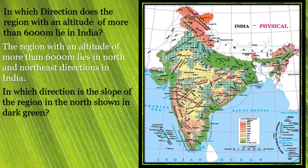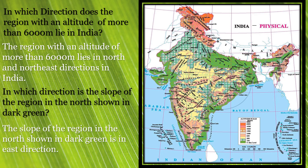The second question: in which direction is the slope of the region in the north shown in dark green? We can see rivers like Ganga, Gomati, Gandak, and Ghagra flowing in the east direction. Since the rivers are flowing eastward, the slope is also in the east direction. So the slope of the region in the north shown in dark green is in the east direction.